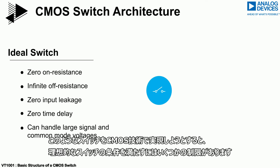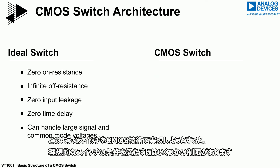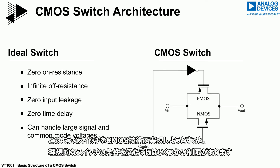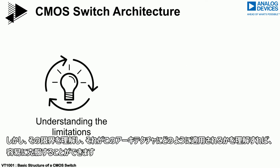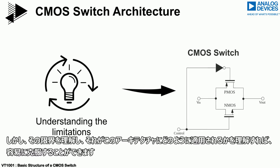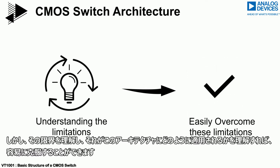If we look at the implementation of such a switch using CMOS technology, some limitations will exist that impact achieving the criteria of an ideal switch. However, if we understand the limitations and how they apply to this architecture, they can be easily overcome.